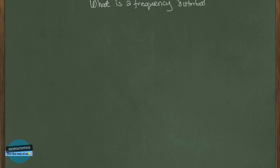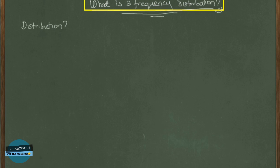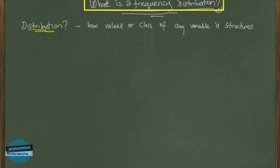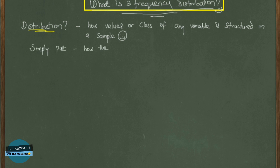Hi, what is a frequency distribution? For us to understand what a frequency distribution is, it will be better we start from the definition of a distribution. So what is a distribution? A distribution is how values or class of any variable is structured in a sample. What we just mean by this is how the values or a class is distributed — it's as simple as that.